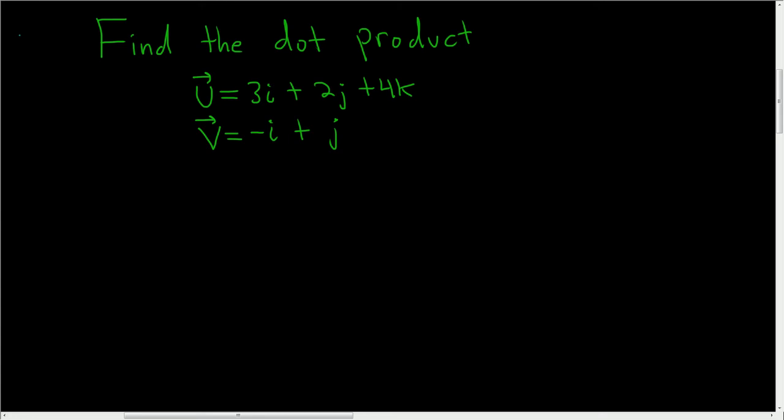Find the dot product. So we're given two vectors, and we're asked to find the dot product.